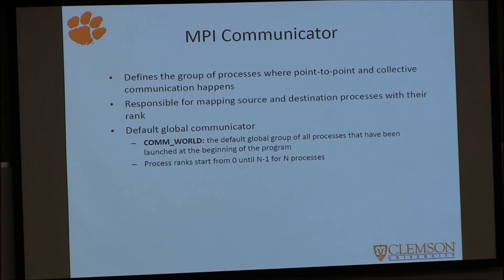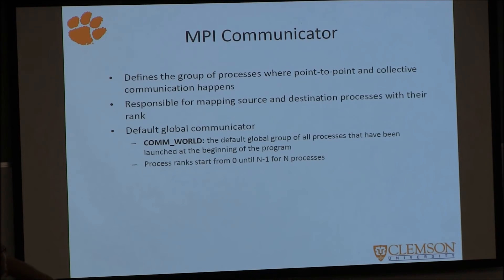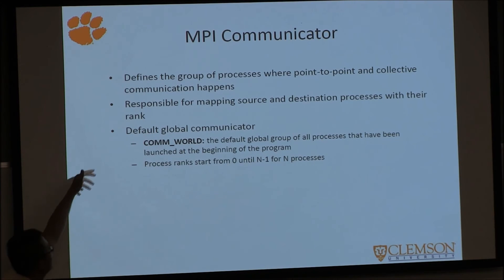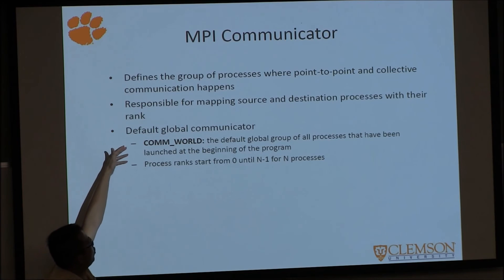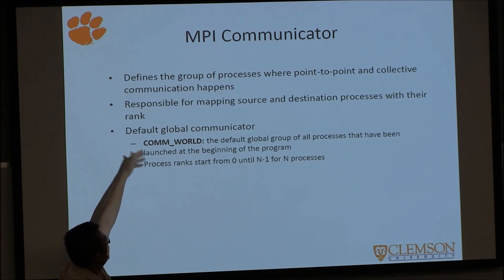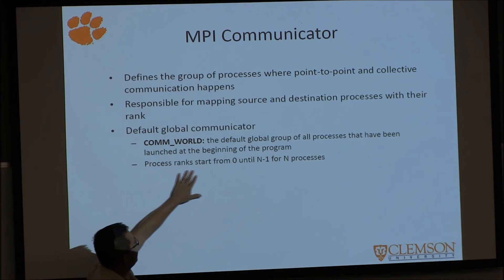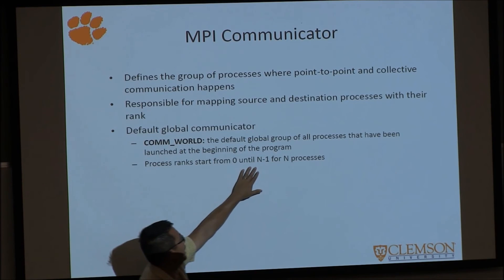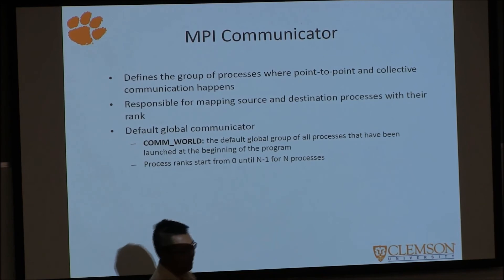The first item we look at is the MPI communicator. It defines the group of processes where point-to-point and collective communication happens, and it maps each executing process to a certain index. The default global communicator is MPI_COMM_WORLD, and process ranks start from 0 to N-1 for N processes.